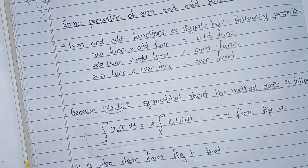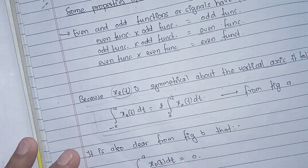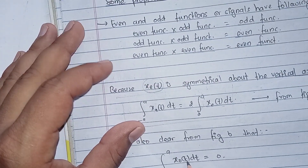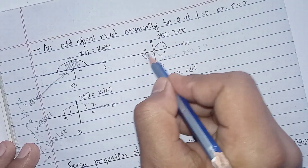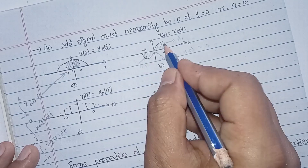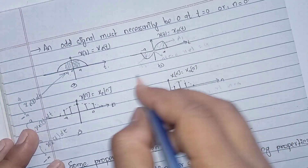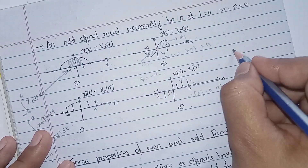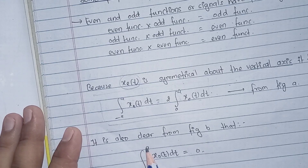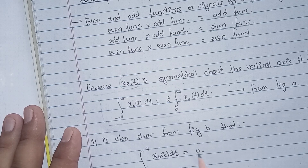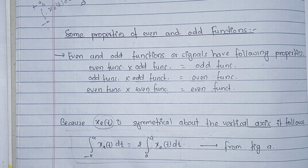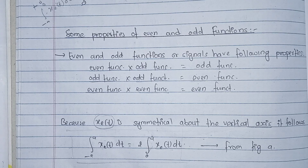As is also clear from figure b: the integration of an odd function from minus a to a is always equal to 0. This is because the area A1 and area A2 have equal magnitude but opposite direction, so A1 equals minus A2, and therefore A1 plus A2 equals 0. Therefore the area under an odd function from minus a to a with respect to dt is always equal to 0. These are the properties of even and odd functions.